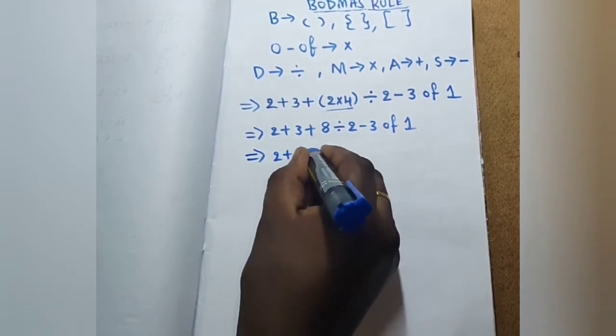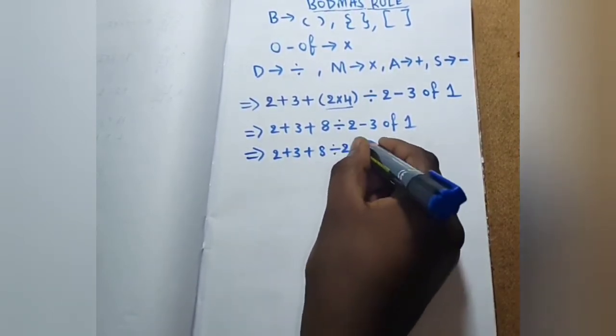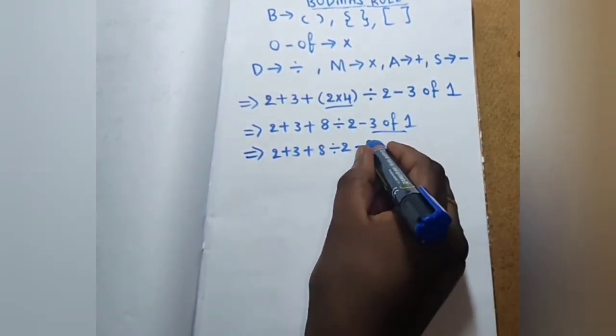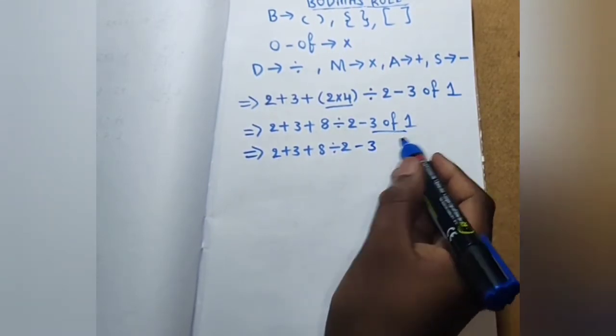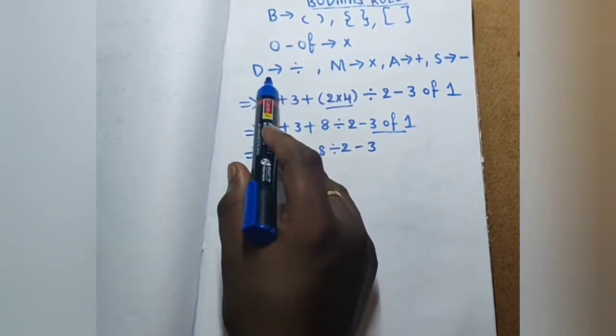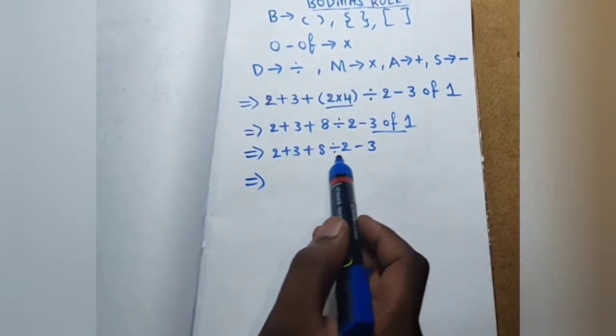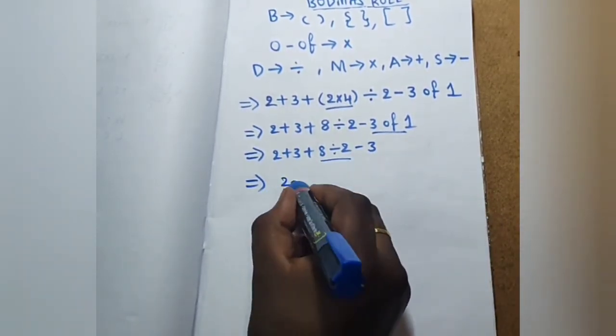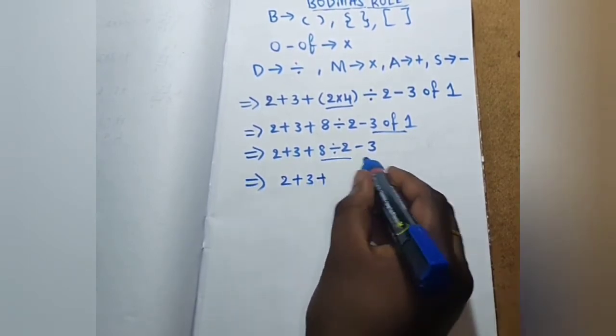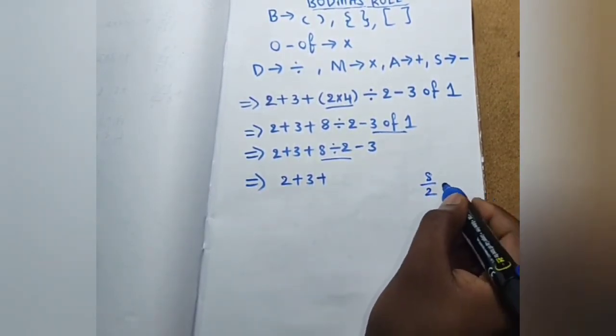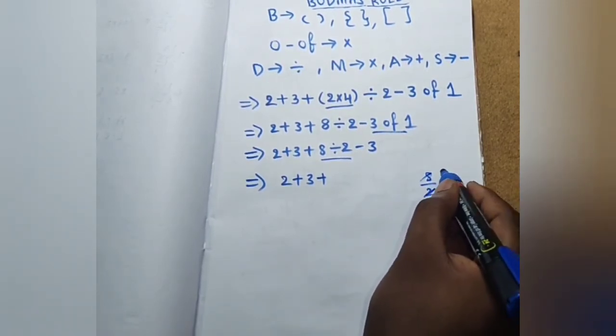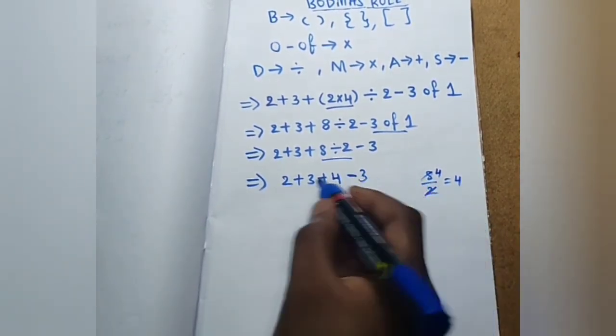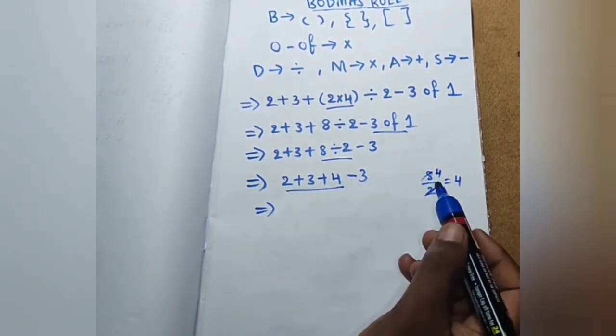2 plus 3 plus 8 divided by 2 minus 3 of 1. 3 of 1 is 3 into 1. Next, this rule: first division, then multiplication, then addition, then subtraction. Division is nothing but 8 divided by 2. 8 divided by 2 is 4. 4 minus 3 plus.